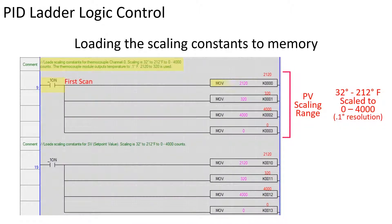On the first scan, 2120 is moved to memory location K0. This represents 212 degrees with one decimal place. A value of 4000 is moved to location K2. A value of 320 is moved to location K1. A zero is moved to location K3.